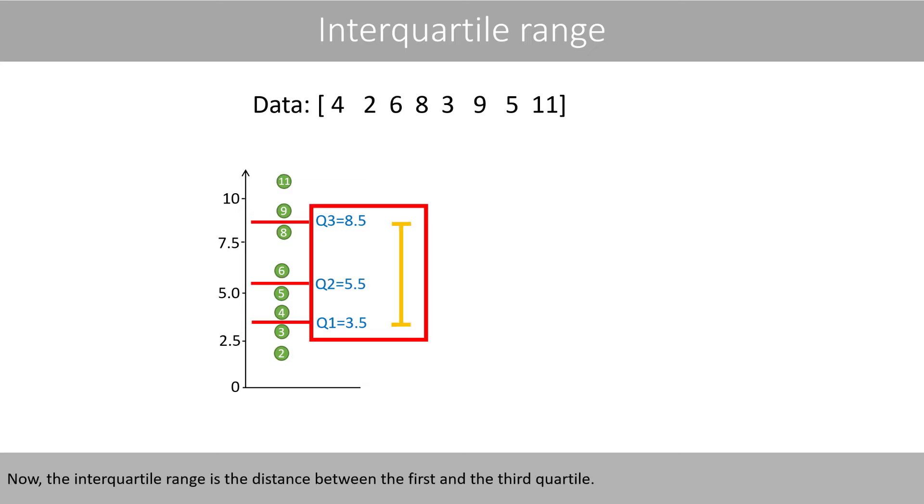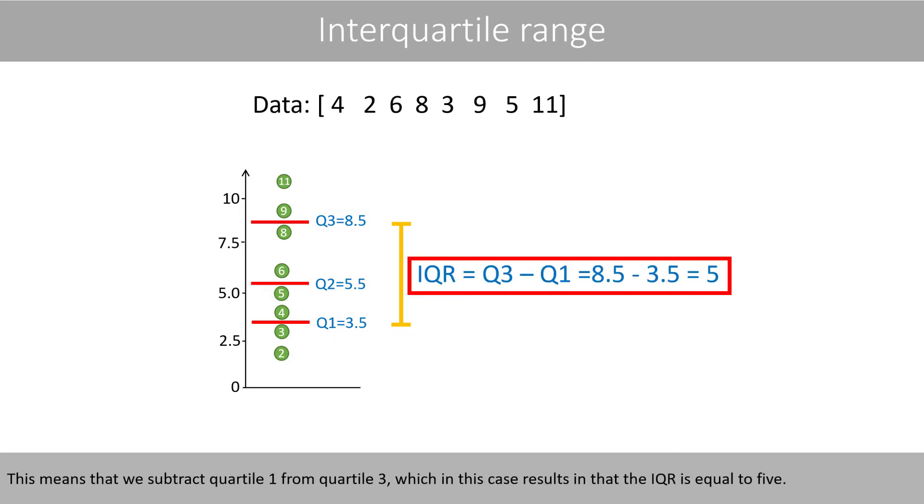Now, the interquartile range is the distance between the first and the third quartile. This means that we subtract quartile 1 from quartile 3, which in this case results in that the interquartile range is equal to 5.